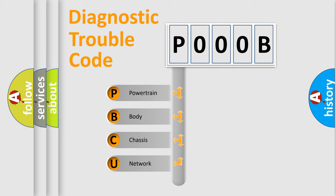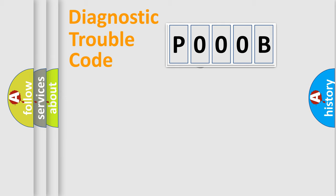We divide the electric system of automobile into four basic units: Powertrain, Body, Chassis, and Network. This distribution is defined in the first character code.